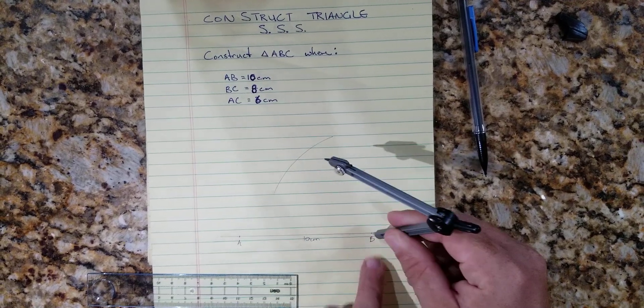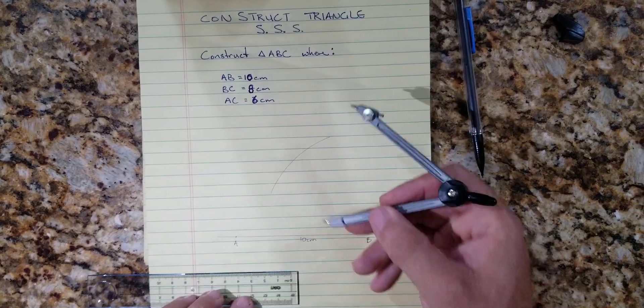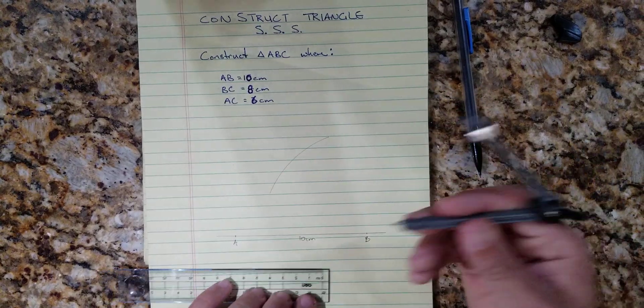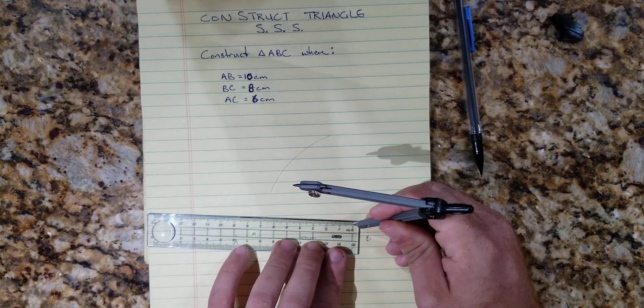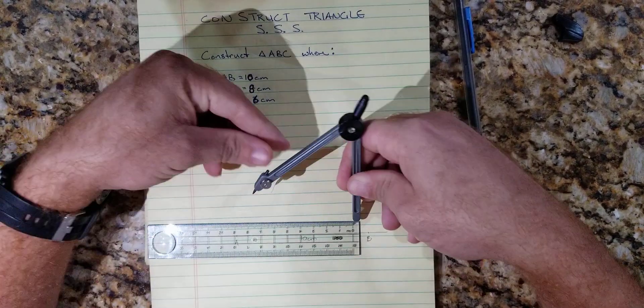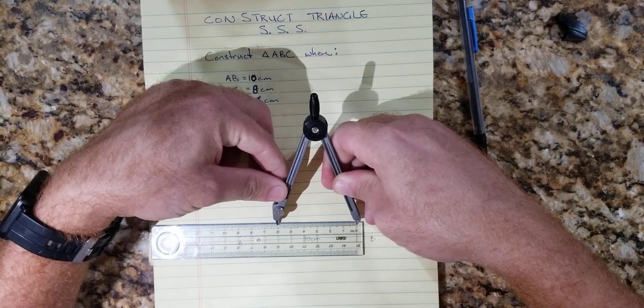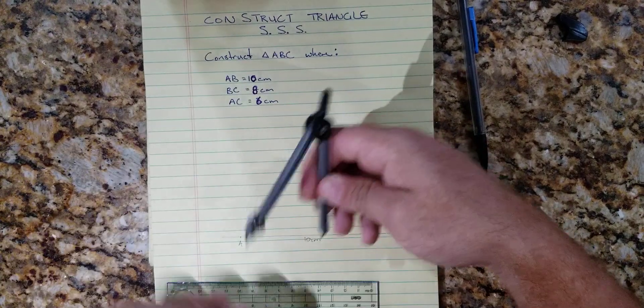And all of this is 8 centimeters away from B. Now AC is 6 centimeters, so we're going to open our compass out. We're going to now go to 6 centimeters on the ruler and we're going to go to point A.